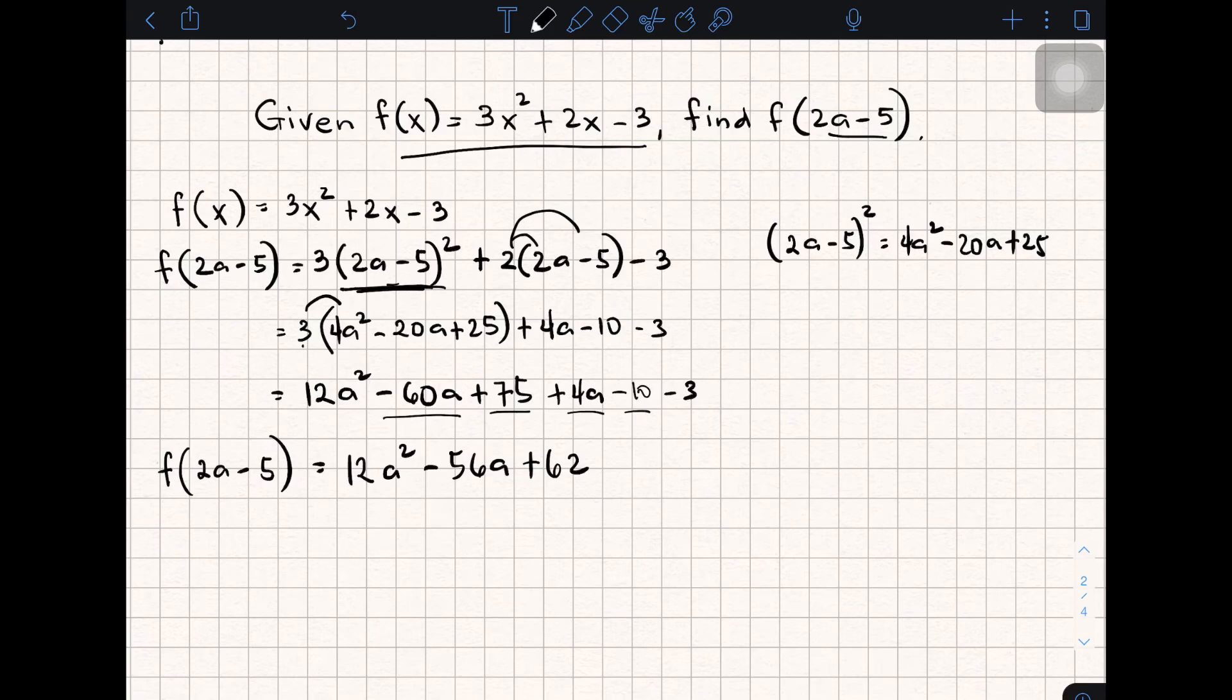So when you have the input of 2a - 5, your output is 12a² - 56a + 62. That's it for the second part of evaluating functions. I hope you learned something from this video, and don't forget to like and subscribe to our YouTube channel.